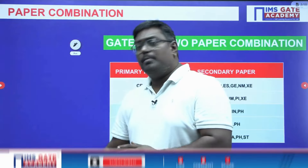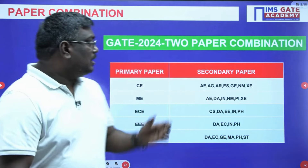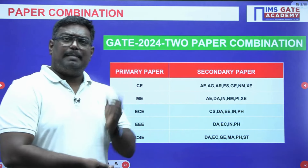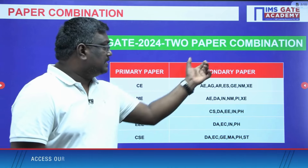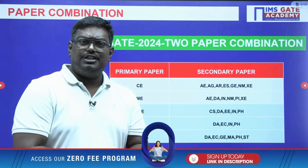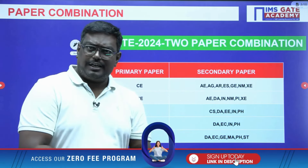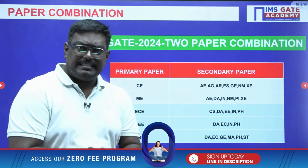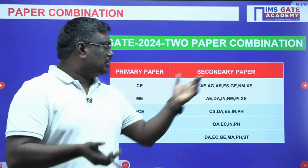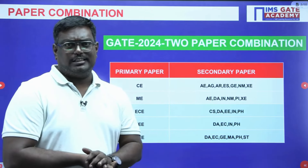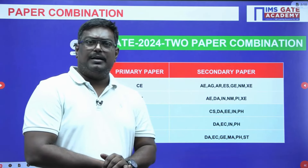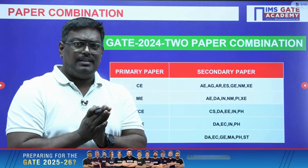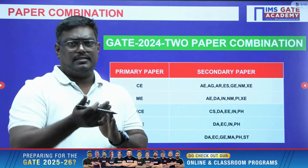Now coming to the branches: we have civil engineering, where the primary paper is civil engineering. The secondary paper can be agricultural engineering, architectural engineering, aerospace engineering, XE paper, geomatics, naval architecture, or environmental science. Out of these papers, we will discuss which is the best branch in the later slides.